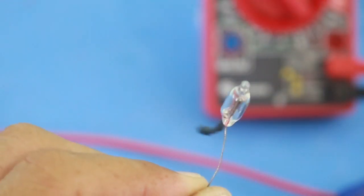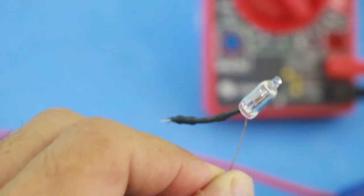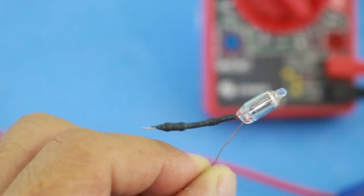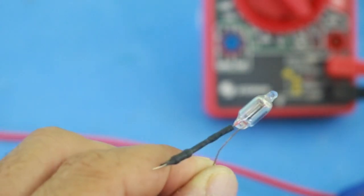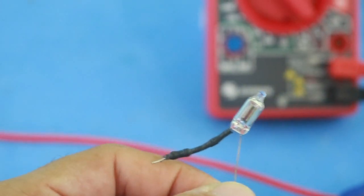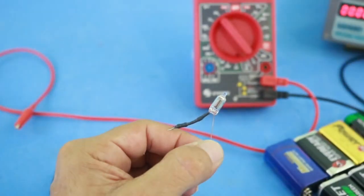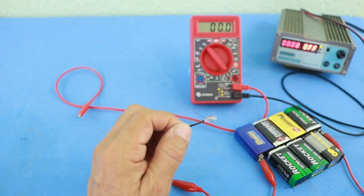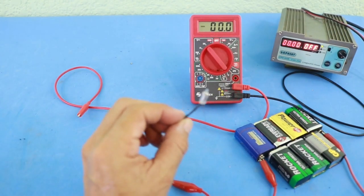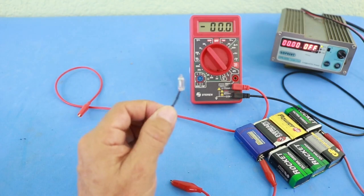The neon lamp is simply a pair of electrodes inside the glass bulb which is filled with neon gas. This type of lamps are now not in use anymore, only in some applications, but they were very popular in the past.